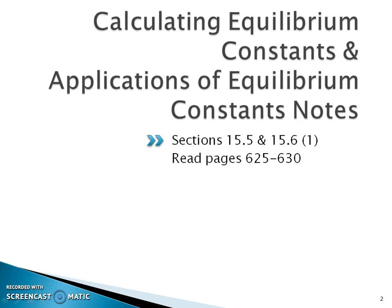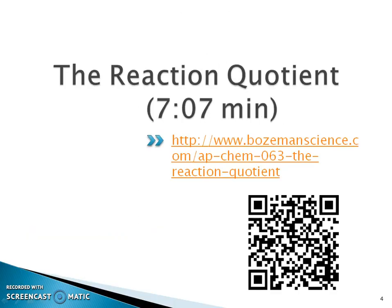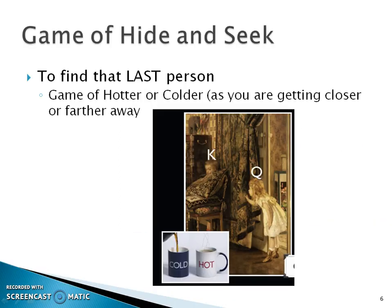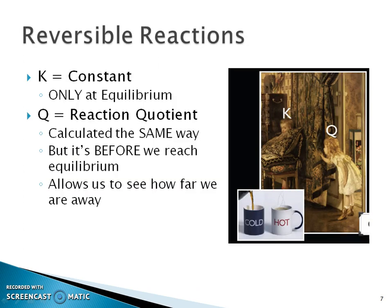This is Mrs. O'Neill for AP Chemistry Chapter 15, Sections 5 and 6, Part 1 — calculating equilibrium constants and applications of equilibrium constants. These are the notes, so you should have watched that intro lesson on the reaction quotient. My notes contain what he talked about, including his hide-and-seek analogy, reversible reactions, and how K is that equilibrium constant.